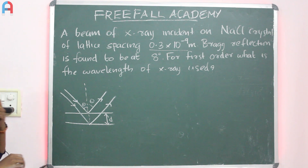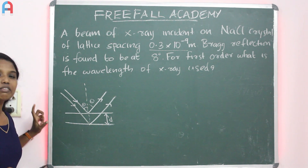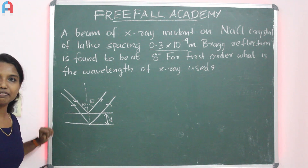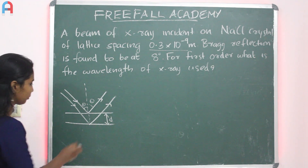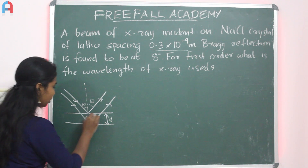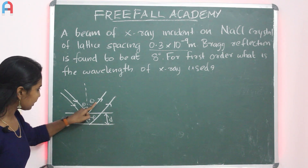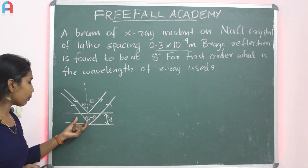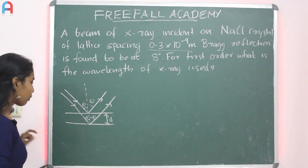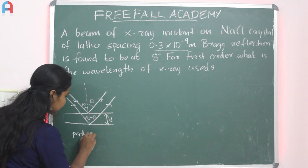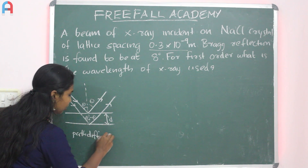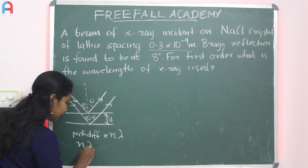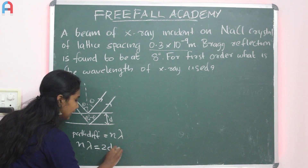We apply Bragg's law. These two scattered waves interfere constructively when they are in phase after scattering. The path difference is equal to an integral multiple of the wavelength. That is: n lambda equals 2d sin theta.